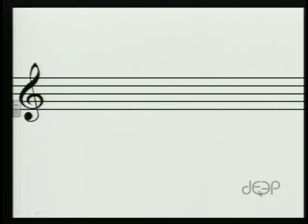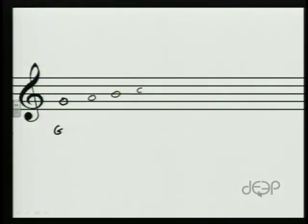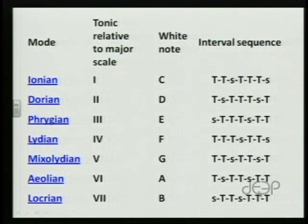We can really do things two ways. One is we might say: give me a Dorian mode based on any given pitch. So let's start with the note G and establish a scale that's a Dorian mode based on G. The first thing we know is we have to represent every single letter: G, A, B, C, D, E, F, and G. Now let's go to the Dorian mode. We see that our whole step/half step pattern is whole, half, whole, whole, whole, half, whole.